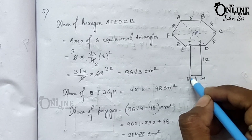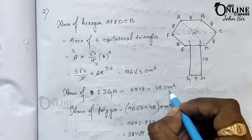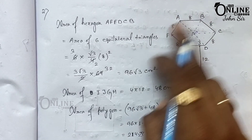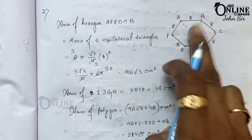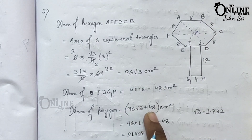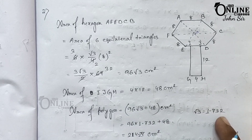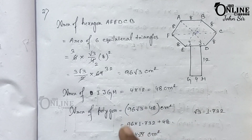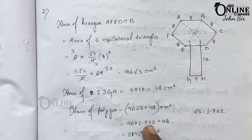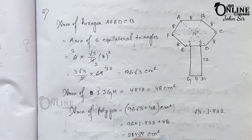For the rectangle, length equals 12 and breadth equals 4, so area equals 48 centimeters square. To find the whole area, add 96√3 plus 48. Using √3 ≈ 1.732: 96 times 1.732 plus 48 equals approximately 214.27 centimeters square. That is the final answer.